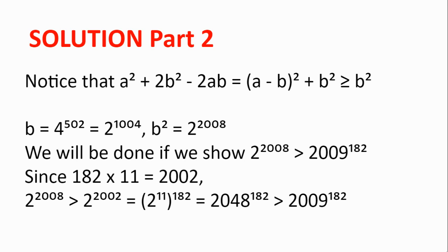And hence, we have shown that the smaller bracket is indeed greater than 2009 to the power of 182. So both brackets are greater than 2009 to the power of 182. So we have successfully factorized 3 to the power of 2008 plus 4 to the power of 2009 to satisfy the conditions of the problem.